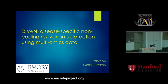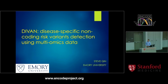Our next speaker is Steve Chin from Emory University. Steve has done a lot of exciting work in statistical genetics, including his work in the International HapMap Consortium. Today he's going to talk about the identification of non-coding risk variants associated with complex diseases based on multi-omics profiles.